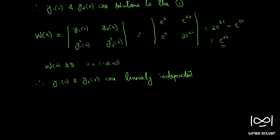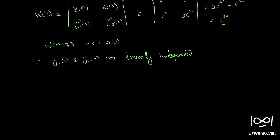Since y1(x) and y2(x) are solutions and they are linearly independent, we can write a general solution using the linear independence property: y = ae^x + be^(2x). This is the general solution to the problem.